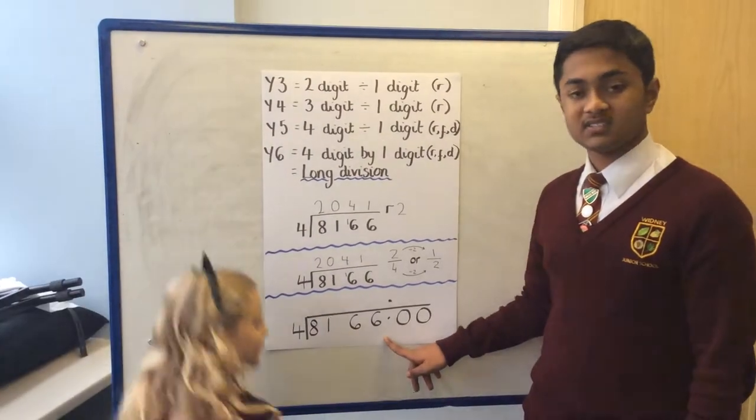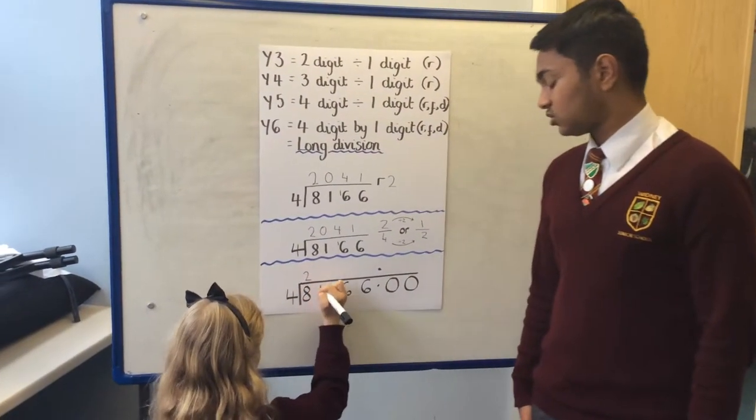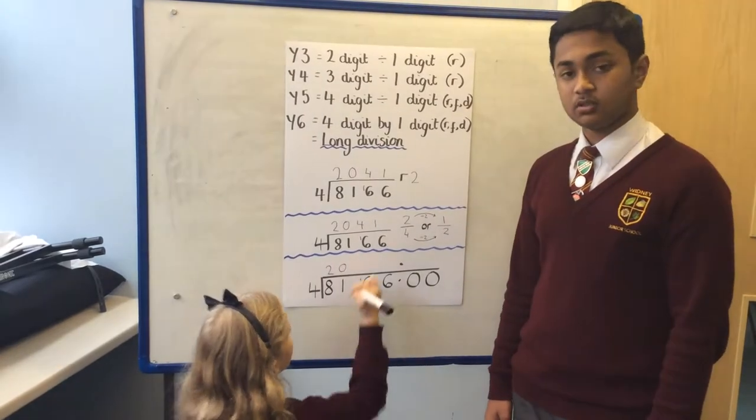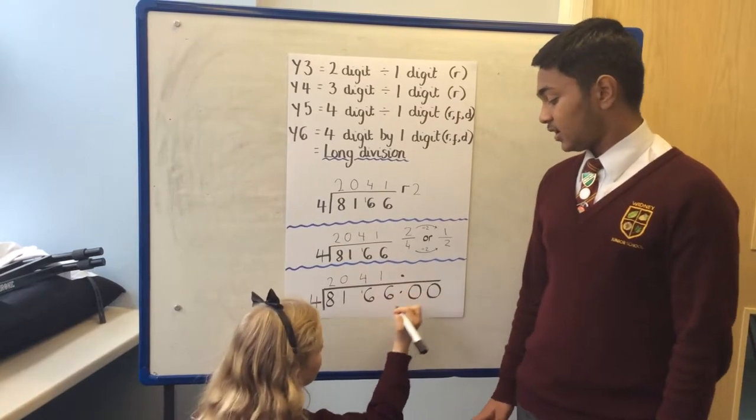Now if we do it as a decimal, again 4 into 8 goes twice. 4 doesn't go into 1, so it's a zero, we carry the 1. 4 into 16 goes four times. 4 into 6 goes once.